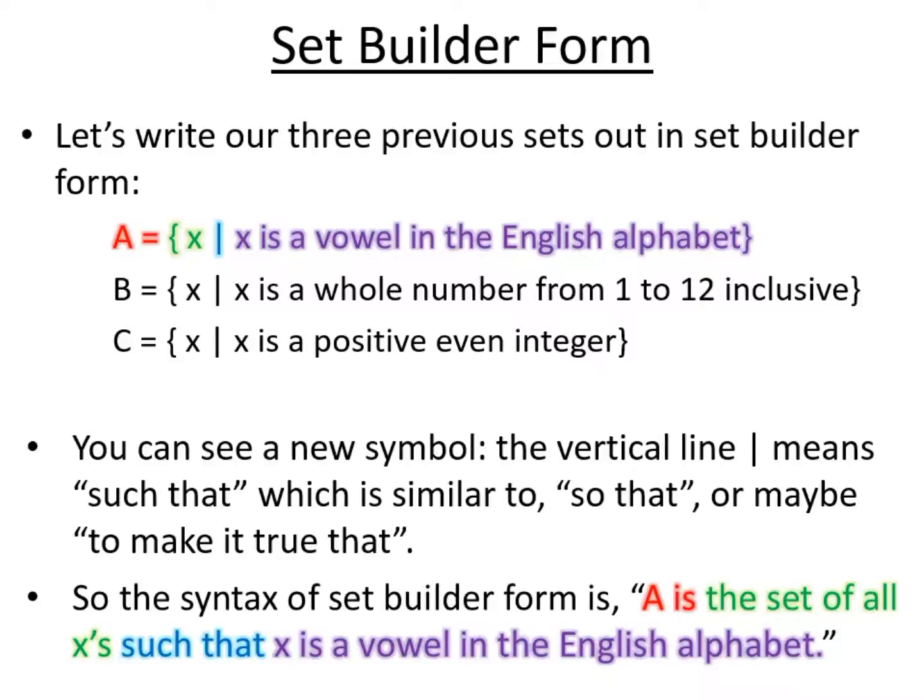Likewise with set B, set B is the set of all X's if X is a whole number from 1 to 12 inclusive. Again, in words there. So we're basically setting what members of our set are represented by, an X, and then we're setting a condition for what is an X, how do we count an X. And so that is the syntax of set builder form.